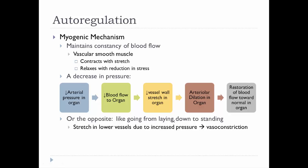Another way we can have autoregulation is through myogenic mechanisms. These are important in maintaining constant blood flow to tissues in response to small changes in blood pressure. Vascular smooth muscle contracts when stretched and relaxes when there's a reduction in stress or stretch. For example, with a decrease in pressure, there's less arterial pressure in an organ, meaning decreased blood flow and less stretch on the blood vessel wall. Therefore, the arterioles relax or dilate in response to decreased stretch, restoring blood flow to the organ.